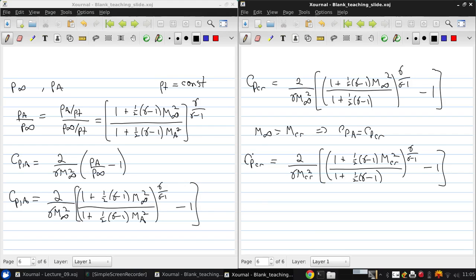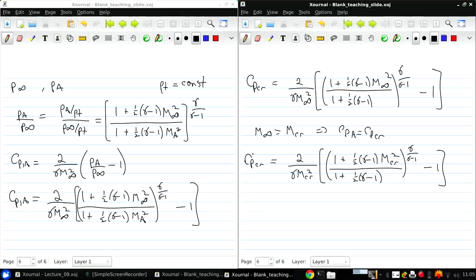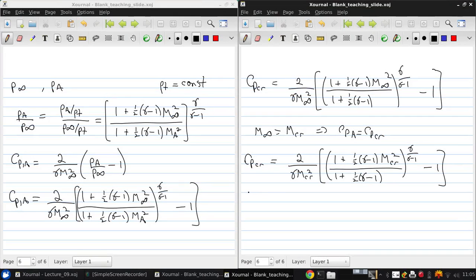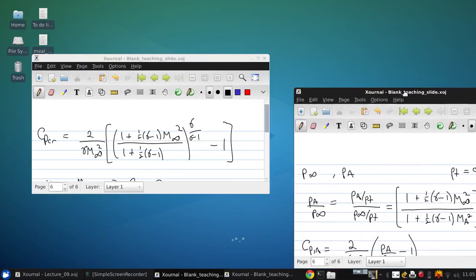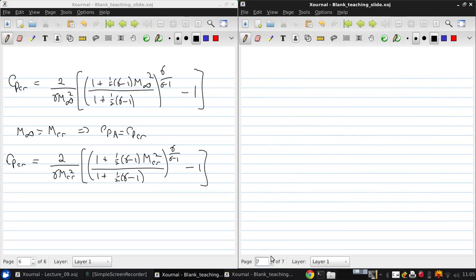Now, to constrain the problem fully, what we need to do is combine this with one of the compressibility corrections. That allows the critical Mach number to be estimated for a given airfoil. First thing we need to do is obtain CP0, the low speed incompressible pressure coefficient at the minimum pressure point on the airfoil. We can get this from thin airfoil theory, or from numerical methods, or from an experiment.